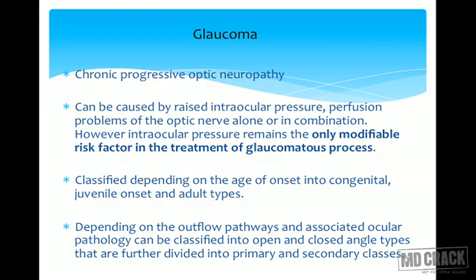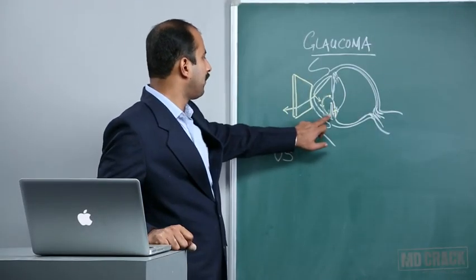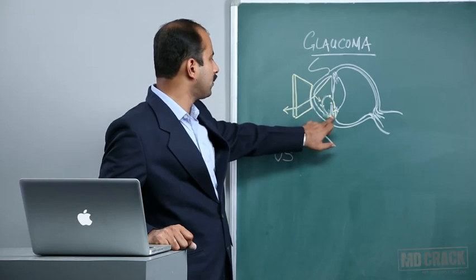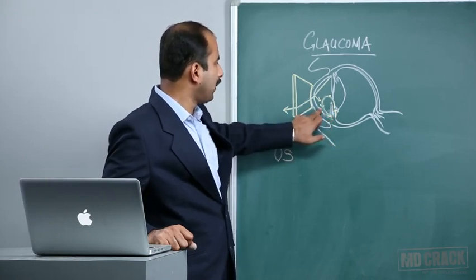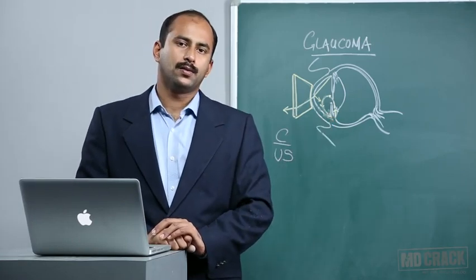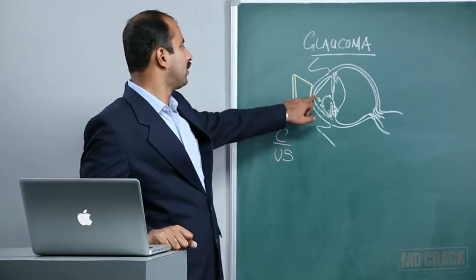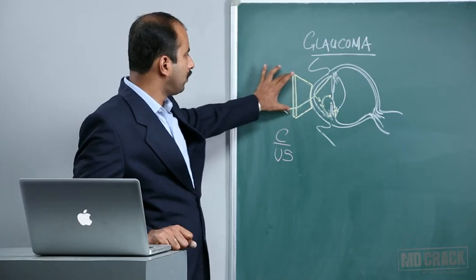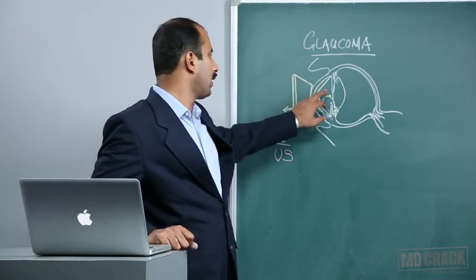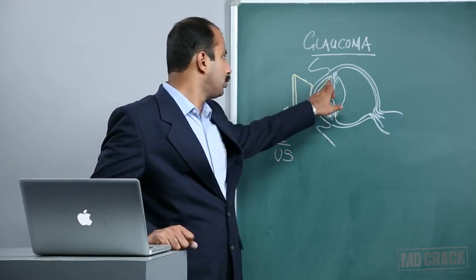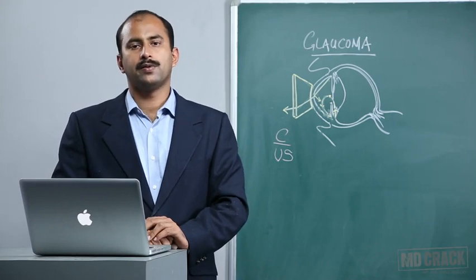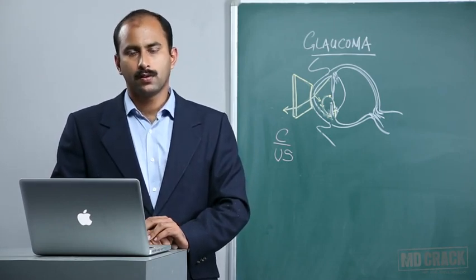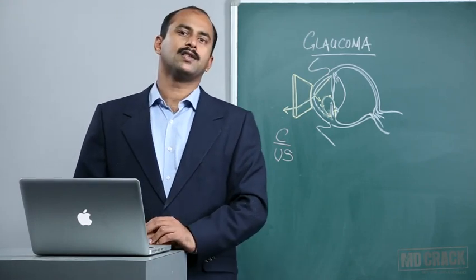Glaucoma is classified depending on age of onset into congenital, juvenile, and adult types. Depending on outflow pathways and associated ocular pathology, it is classified into open angle and angle closure. We classify by examining the anterior chamber angle — the space formed between the peripheral iris and the cornea — which cannot normally be visualized by the naked eye due to total internal reflection at the posterior surface of the cornea. A gonio lens superimposed on the cornea refracts rays out of the eye, permitting visualization of the anterior chamber angle. No diagnosis of glaucoma is complete without gonioscopy.